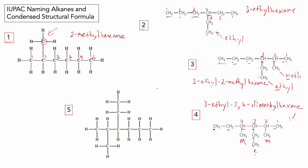Number five: the main chain — meth, eth, prop, but, pent, hex — is hexane. I'll verify the side chain doesn't give a longer chain — also hex — so I stick with the straight chain through the center. The two side alkyl groups are towards the left, so I number one, two, three from the left, giving them the lowest numbers. We've got an ethyl on three and a methyl on two, giving us 3-ethyl-2-methylhexane.